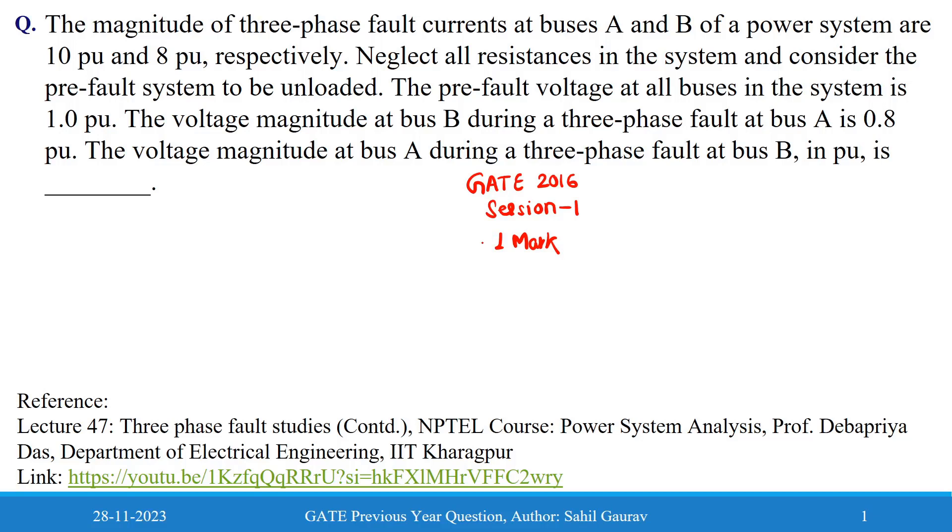Let us see what the question says. The magnitude of three-phase fault currents at buses A and B of a power system are 10 per unit and 8 per unit respectively. Neglect all resistances in the system and consider the pre-fault system to be unloaded.